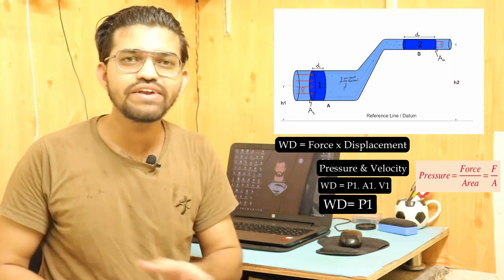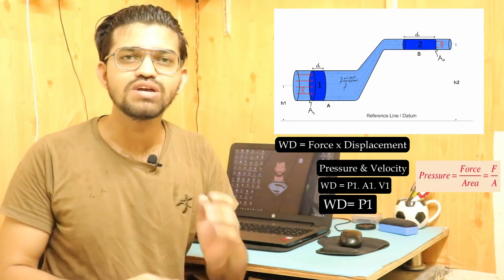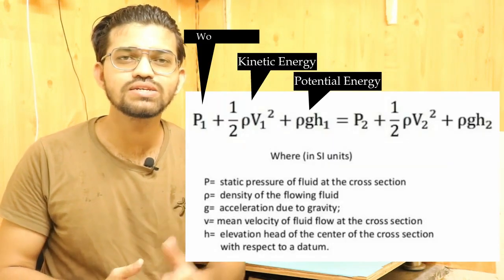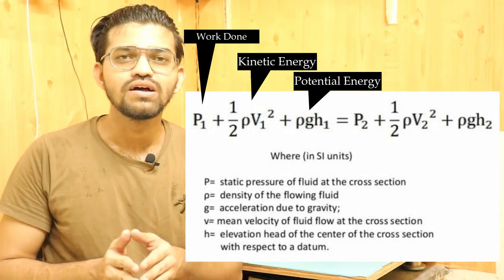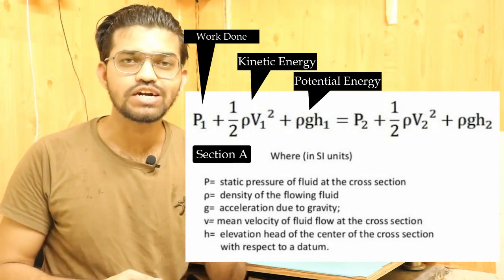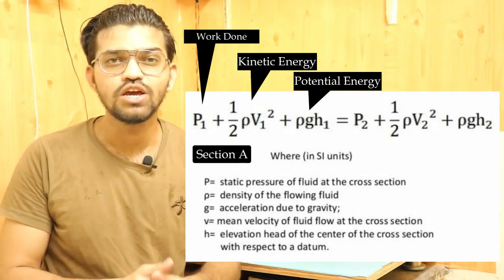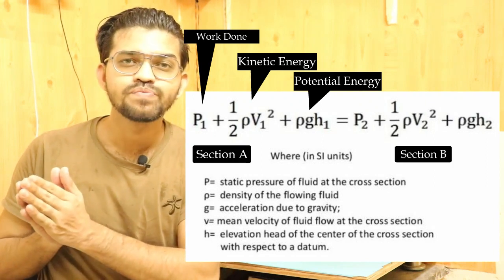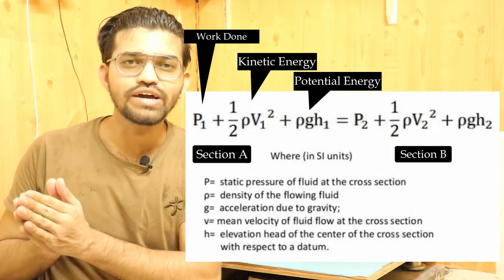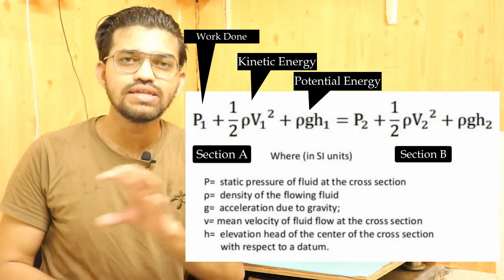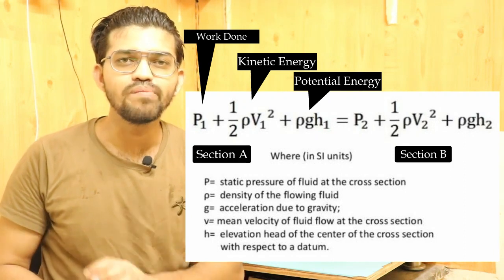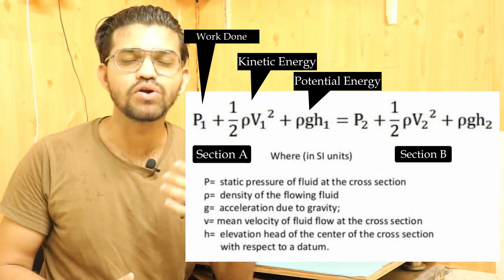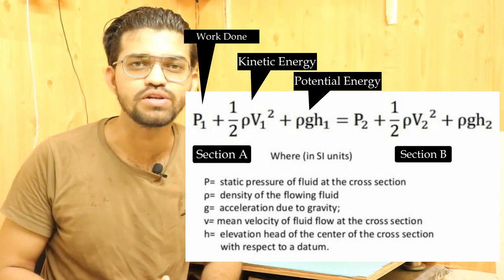The net Bernoulli formula becomes: potential energy plus kinetic energy plus work done at section 1 equals potential energy plus kinetic energy plus work done at section 2, and this sum remains constant. That is: P + ½ρv² + ρgh = constant. That is Bernoulli's principle.